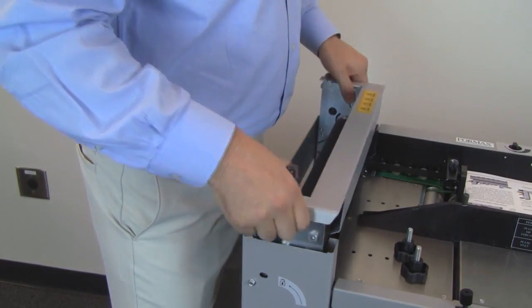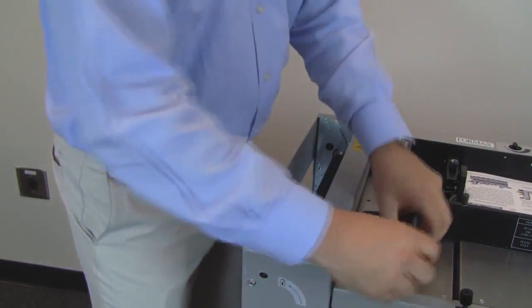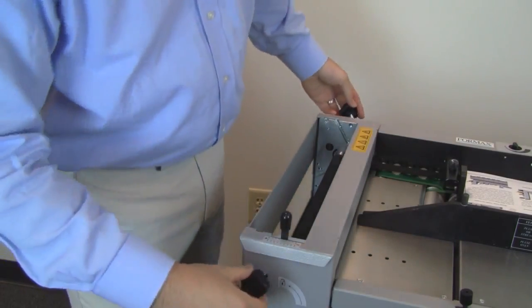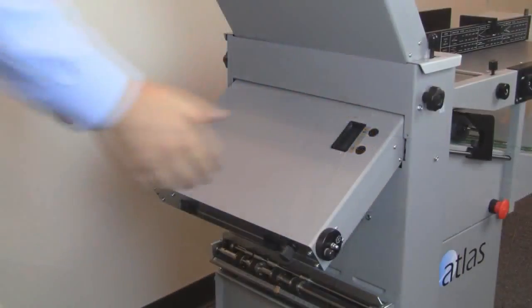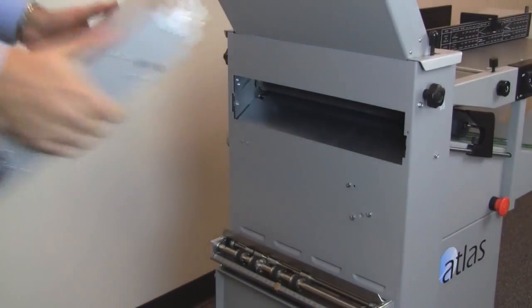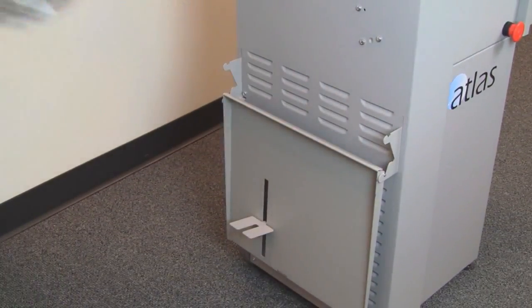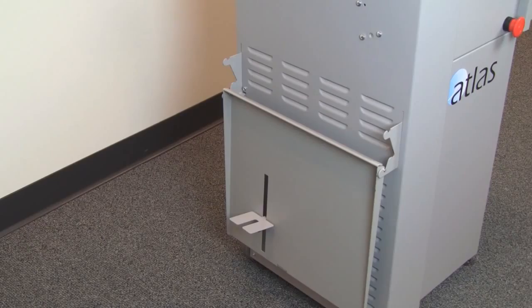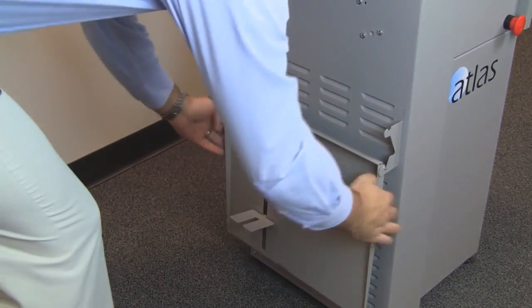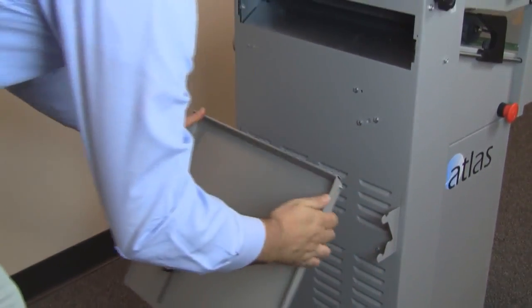Both folders come standard with a perforator scorer attachment which is conveniently stored below the lower fold plate. Installation is very easy. It simply takes the place of the lower fold plate and no tools are required. Remove the fold plate to access the attachment and catch tray.